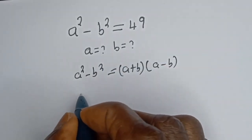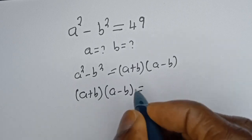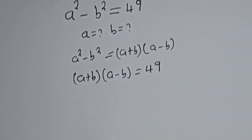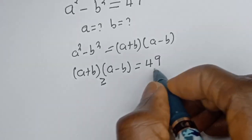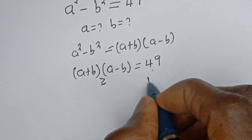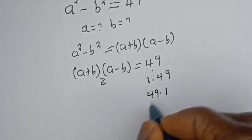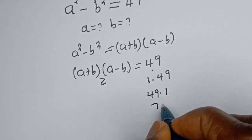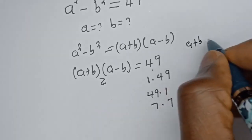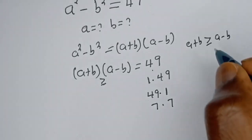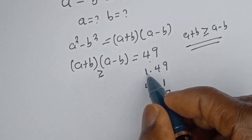So we have A plus B multiplied by A minus B is equal to 49. Now, A plus B is greater than or equal to A minus B. The number 49 can be written as 1 multiplied by 49, or 49 multiplied by 1, or 7 multiplied by 7.